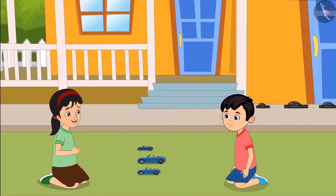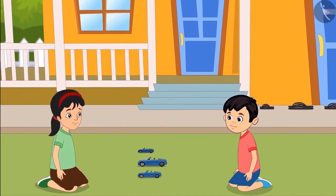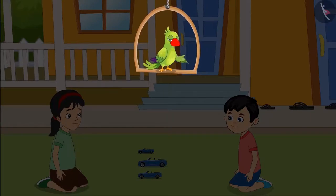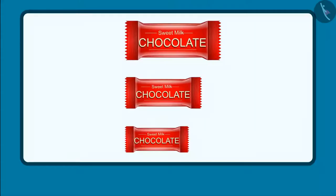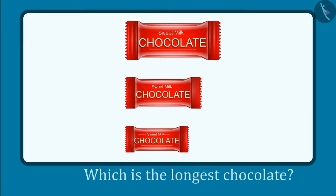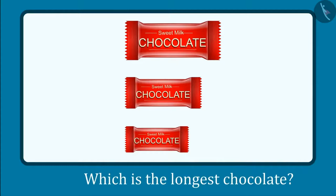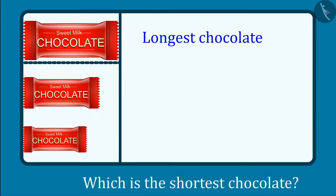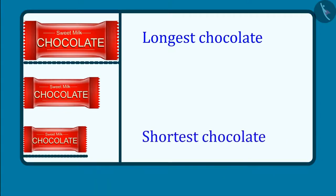Come on, now let's play, Chotu. So kids, now you can also identify the longest object and the shortest object out of three objects like Chotu. Come, let's see. These are three chocolates. Can you tell me, which is the longest chocolate out of these? Yes, this chocolate is the longest. And which is the shortest chocolate out of these three? Yes, this chocolate is the shortest.